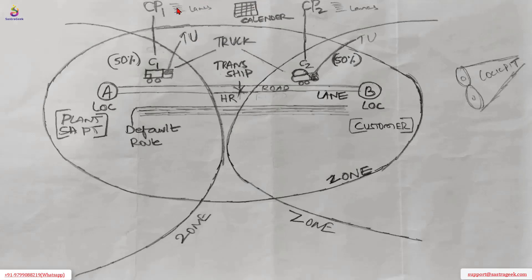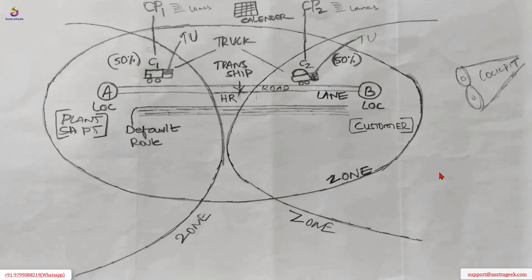There are some calendars, some lanes, and carrier profiles. A carrier will have a carrier profile indicating what services it provides. There will be lanes for which a carrier operates. A location could be a plant or shipping point, and another location could be a customer. These are all certain elements of your transportation master data, and you can process these things in the cockpit.